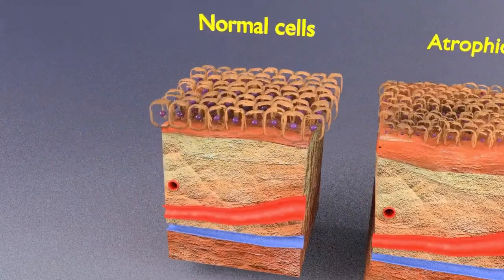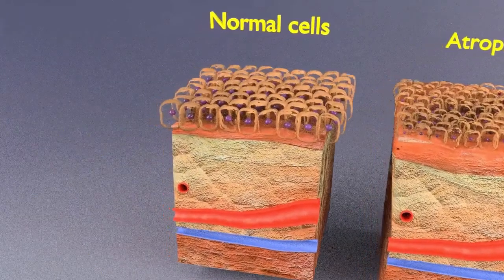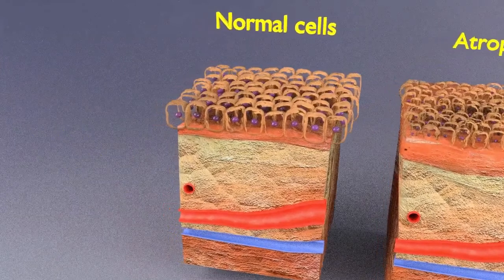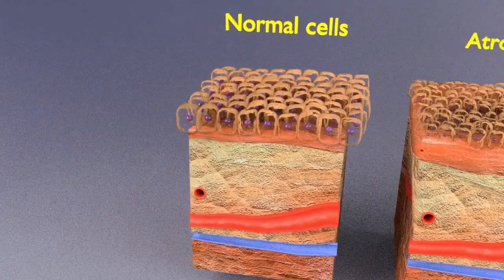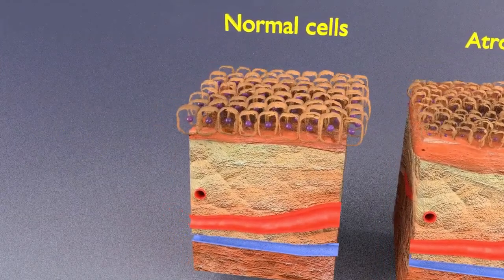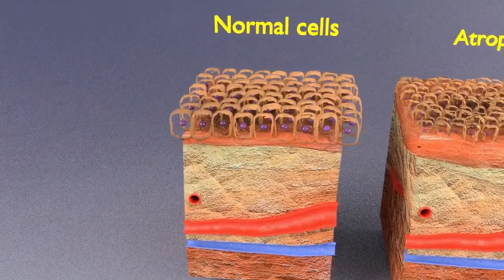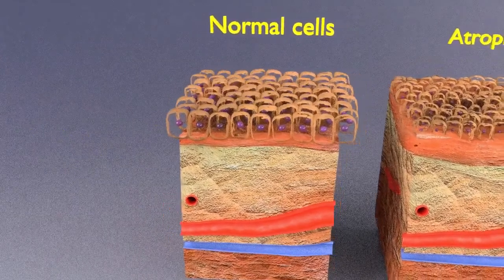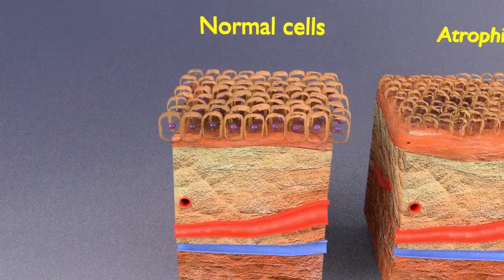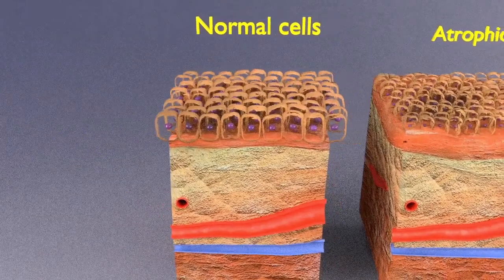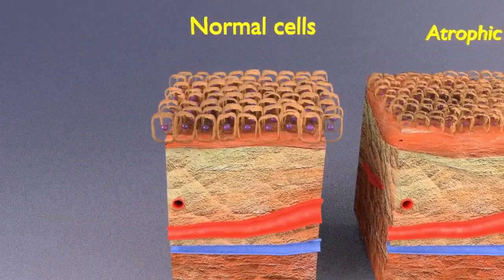Here I am showing a normal simple cuboidal cell layer to compare it with changes seen in cellular adaptations. Cellular adaptations are categorized as atrophy, hypertrophy, hyperplasia, dysplasia, and metaplasia.